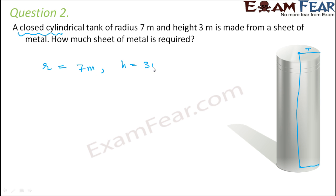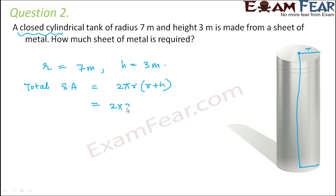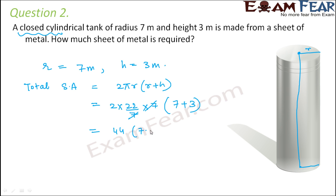The total surface area of a cylinder is 2πr(r + h). That equals 2 × (22/7) × 7 × (7 + 3). The 7s cancel, giving 44 × 10, which equals 440 square meters. So 440 square meters of sheet metal is required.